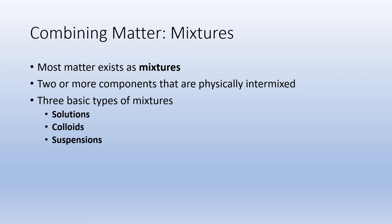We can also talk about combining matter when we address mixtures. Most matter in the universe, especially in the human body, exists as one of three basic types of mixtures, and a mixture includes two or more components that are physically intermixed. We will define each type and provide examples, and it is extremely important that you can identify at least one or two examples of each. The three basic types are solutions, colloids, and suspensions.